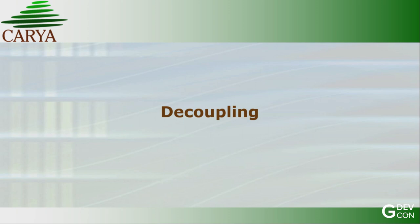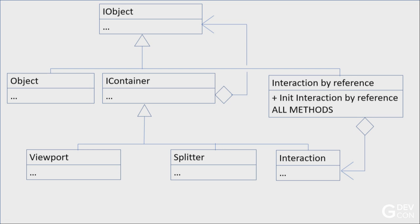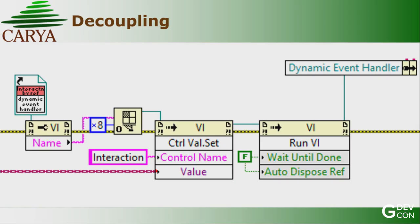Decoupling: for now we have a while loop with events, and if you have a main VI that needs to be scaled you don't want those events in your main event loop. So I made another child class that contains an interaction class by reference - a DVR. All the methods iterate over its contents. To call them I dereference the DVR and call the method - it's a hassle but worth the effort. The init will create or start a dynamic event handler. It's re-entrant, so you can have multiple ones.